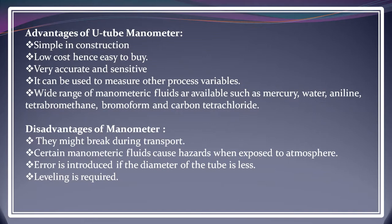Disadvantages of the manometer include: they might break during transport because they are made of glass or transparent metal. Certain manometric fluids such as mercury, tetrabromomethane, and other corrosive liquids are hazardous to the environment and to us. Error is introduced if the diameter of the tube is too small. Leveling is also required — before attaching any U-tube manometer to a process, the manometric fluid must be at zero, otherwise the reading will be faulty.